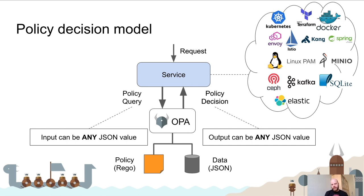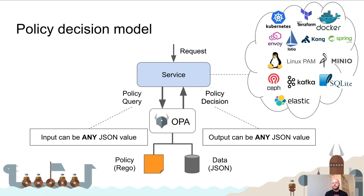OPA makes a decision based on the policy that was provided beforehand, and that decision is also just JSON. That's the secret sauce behind how OPA can work with all these technologies: any product or service capable of sending HTTP requests and parsing JSON can be integrated with OPA.